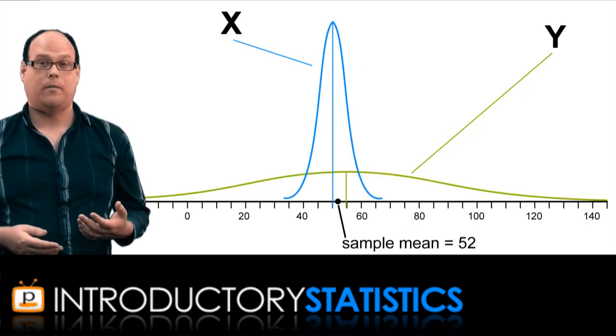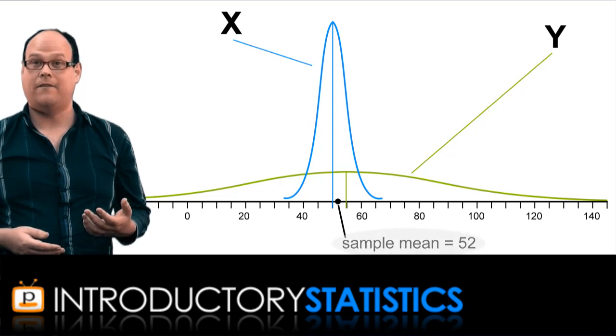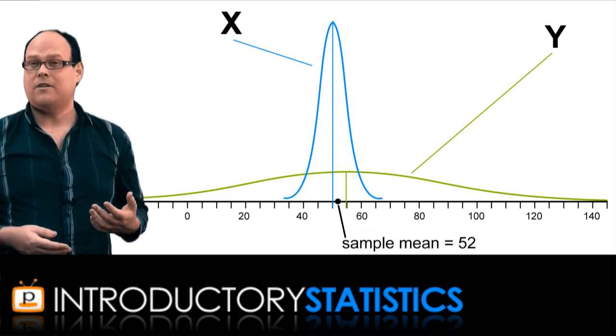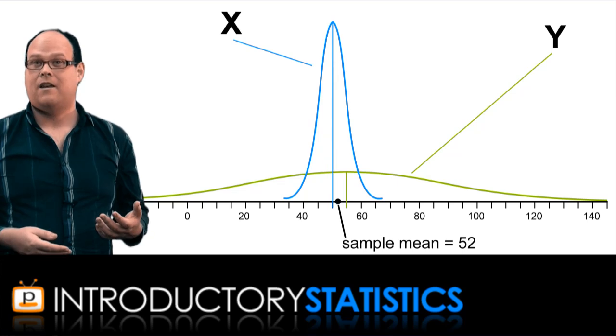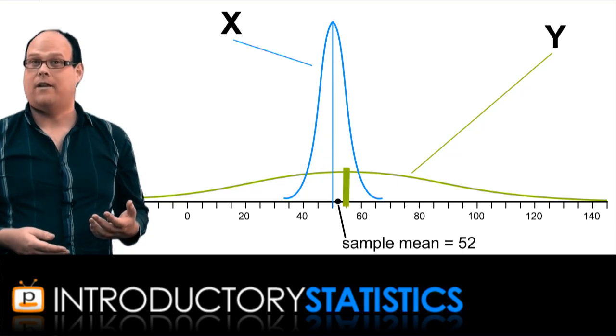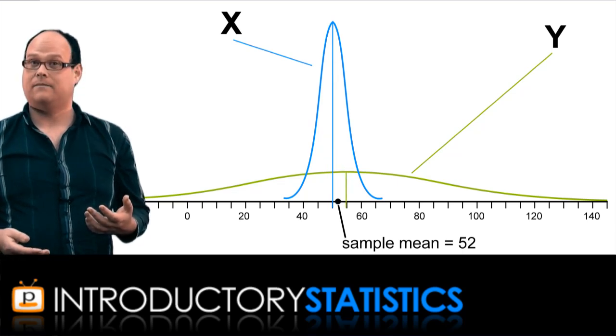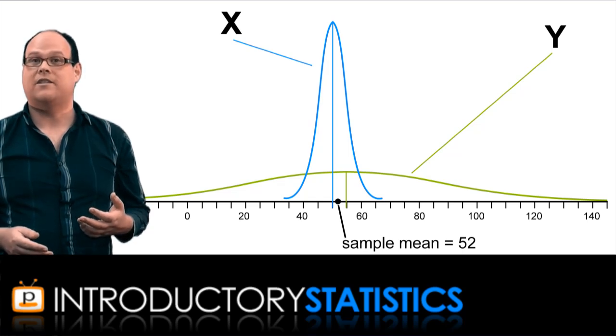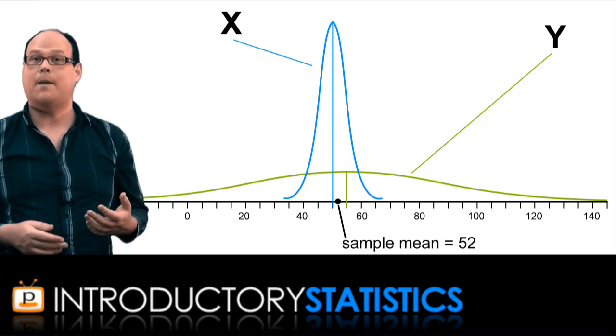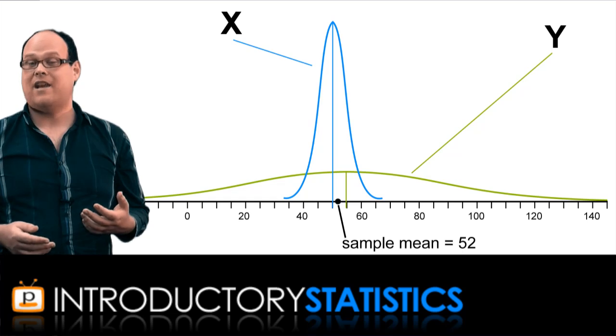Here's an image showing the two populations, x and y, with a sample mean of 52 marked. Notice 52 is closer to 50, the mean of x, than the 55, the mean of y. Does that mean we should guess x? No. Let's look at the sampling distributions instead of the original populations, because the sample mean of 52 is technically a value in one of these sampling distributions.